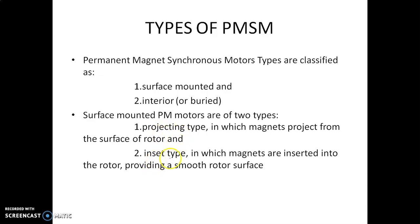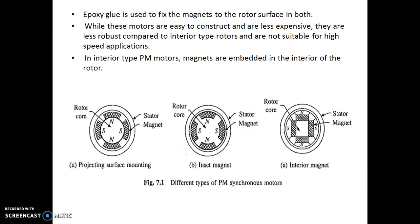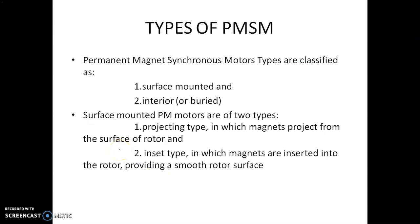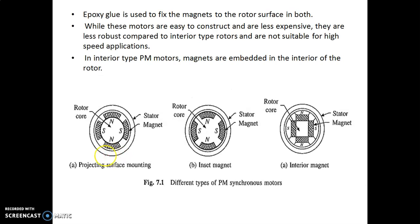The surface mounted type has two sub-classifications: the projecting type and the inset type. In the projecting type, the magnets project from the surface of the rotor. We fix the magnets onto the rotor surface with epoxy glue.